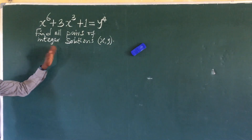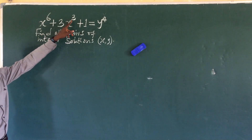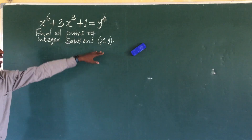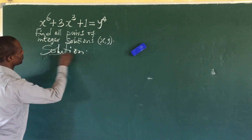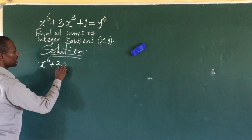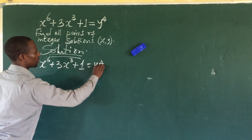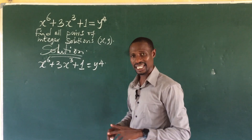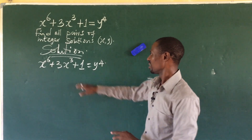Alright, let's go into our challenge for today. The question is: x to the power of 6 plus 3x to the power of 3 plus 1 equals y to the power of 4. Find all pairs of integer solutions for x and y. When I first tried this question, I was taken aback and it took me some days to figure out how to solve it.